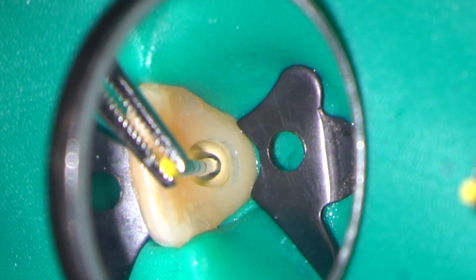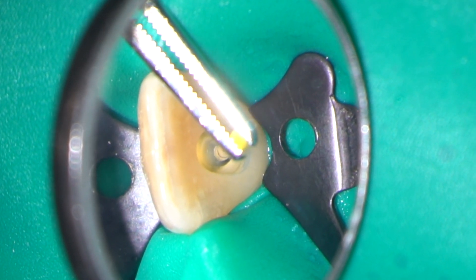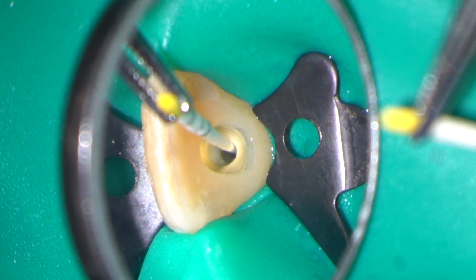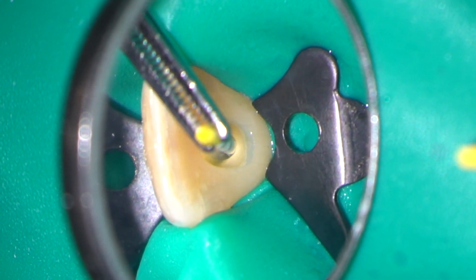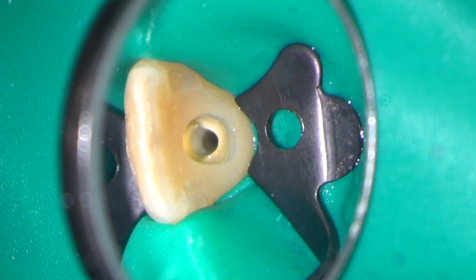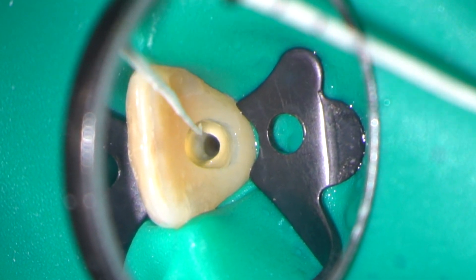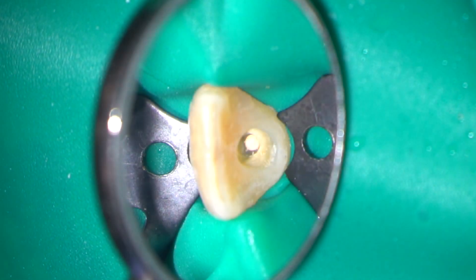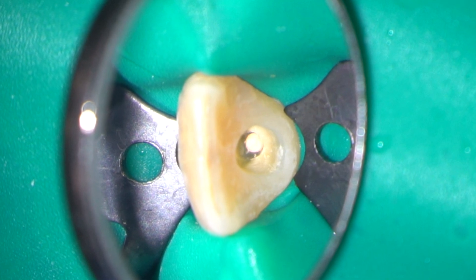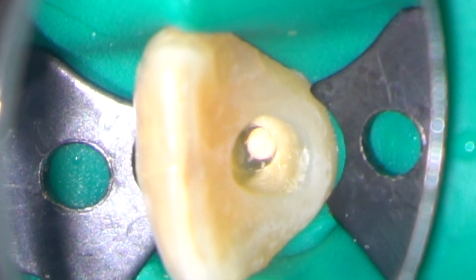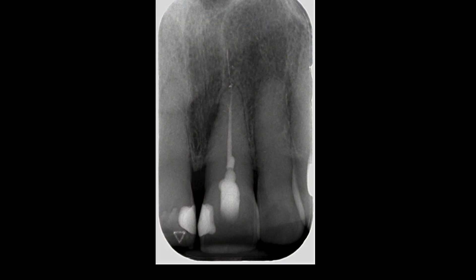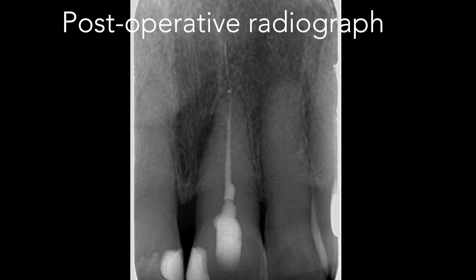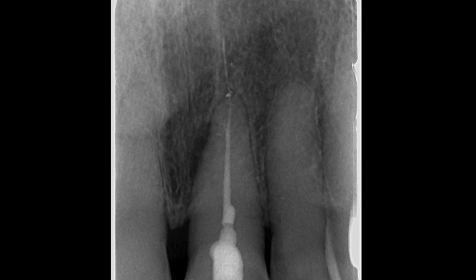Here the canal is being dried with matched paper points before being obturated using a vertically compacted gutta-percha technique. I'm pleased with the final result — there's a good apical-coronal seal and a little lateral canal pointing to the lateral radiolucency.